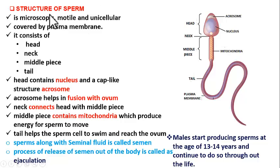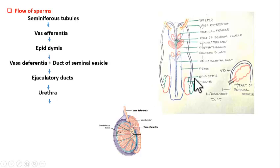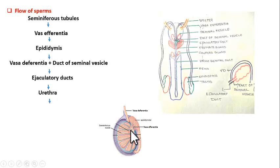What are sperms? Sperms are nothing but the male gametes. The male parent produces male gametes called sperms. So where are sperms produced? Sperms are produced inside the testis, specifically in the seminiferous tubules of the testis.